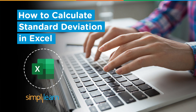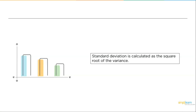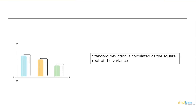Now without further ado, let's get started with how to calculate standard deviation in Excel. First, we will understand what exactly standard deviation is. Standard deviation is a calculated square root of variance. So what is variance?